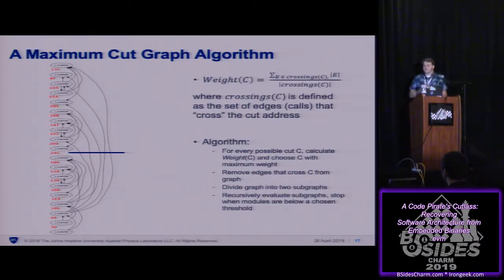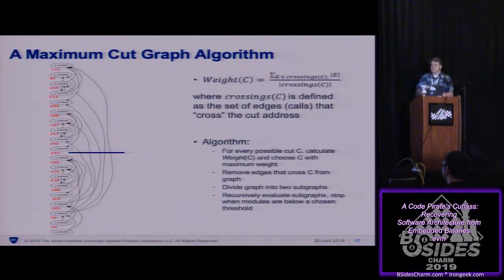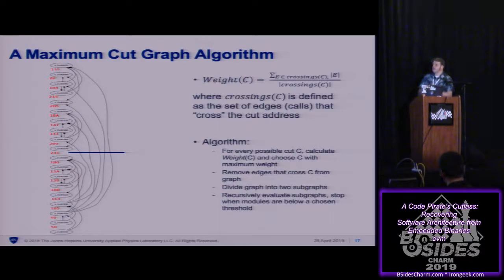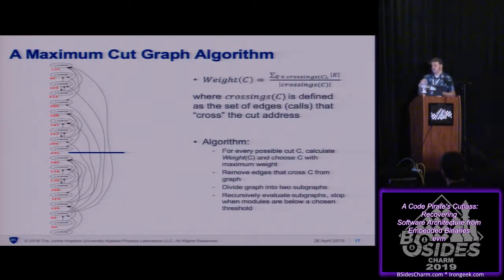We played around with graph algorithms for a while, but they tend to be computationally intensive. We tried a bunch of different things and they were generally very slow and didn't work really well. So I tried to come up with an algorithm to possibly beat LFA. The idea is to keep track of how functions — nodes in the graph — are organized in the binary, rather than treating it as a purely two-dimensional graph segmentation problem.